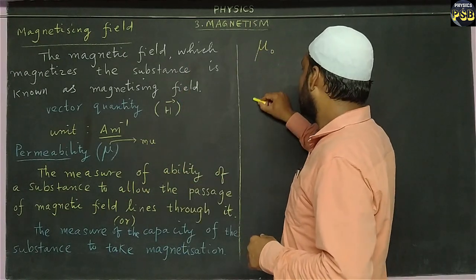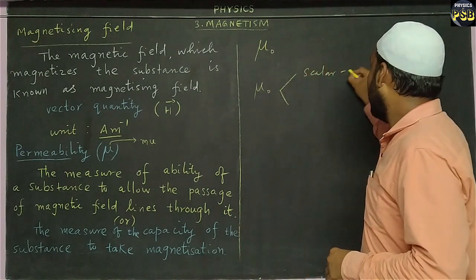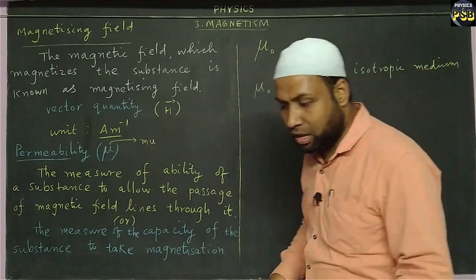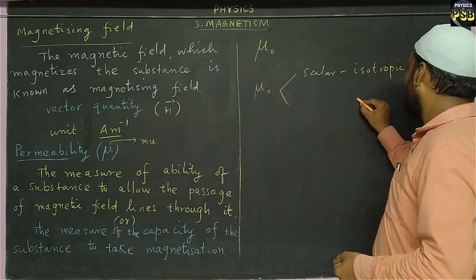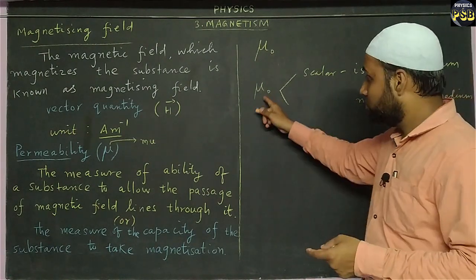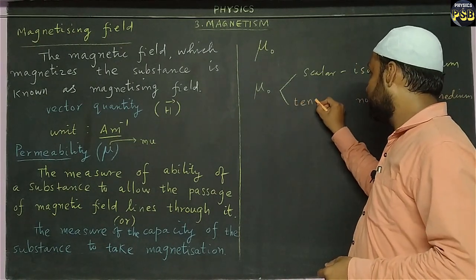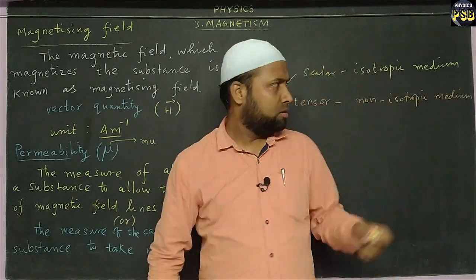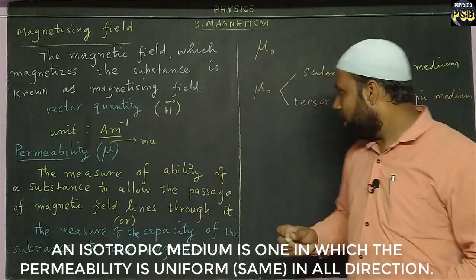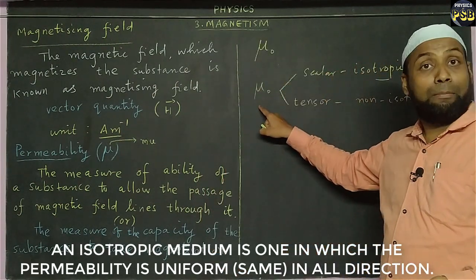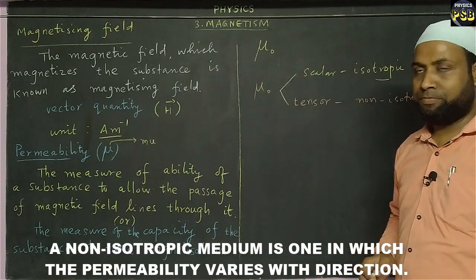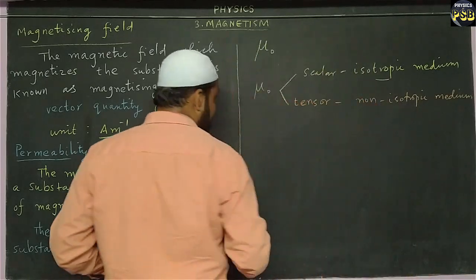Permeability in free space is denoted as mu-naught. It is a scalar quantity in an isotropic medium, whereas in a non-isotropic medium the same quantity acts as a tensor. Isotropic media have the same permeability in all directions, whereas the permeability of a non-isotropic medium varies with direction.